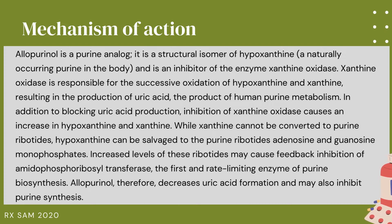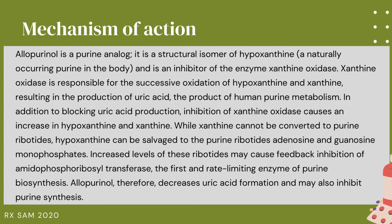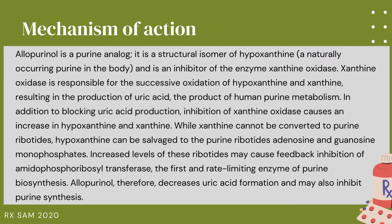In addition to blocking uric acid production, inhibition of xanthine oxidase causes an increase in hypoxanthine and xanthine. While xanthine cannot be converted to purine ribotides, hypoxanthine can be salvaged to the purine ribotides adenosine and guanosine monophosphates. Increased levels of these ribotides may cause feedback inhibition of amidophosphoribosyl transferase, the first and rate-limiting enzyme of purine biosynthesis. Allopurinol therefore decreases uric acid formation and may also inhibit purine synthesis.